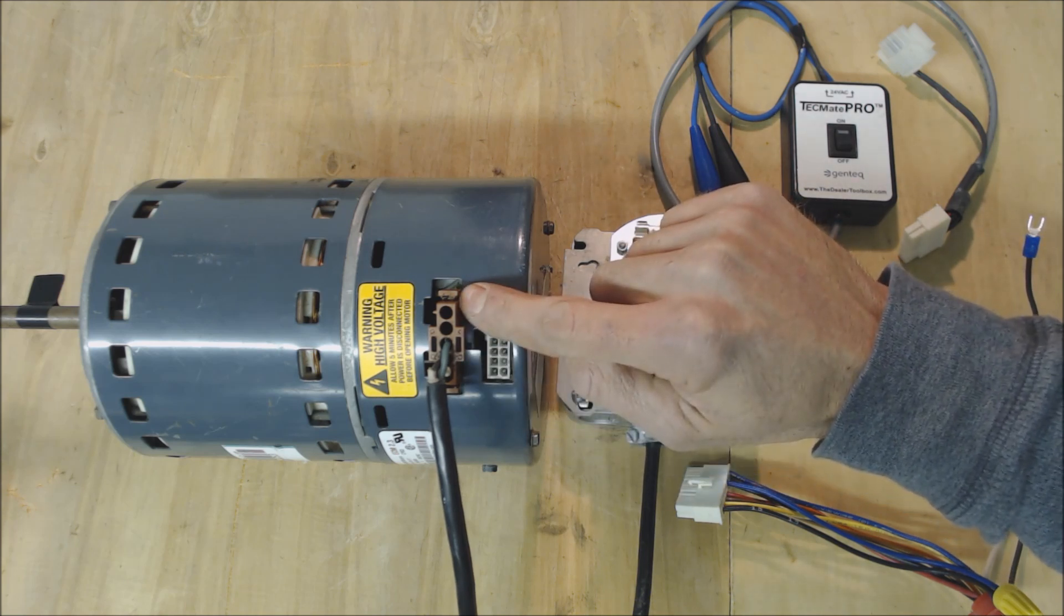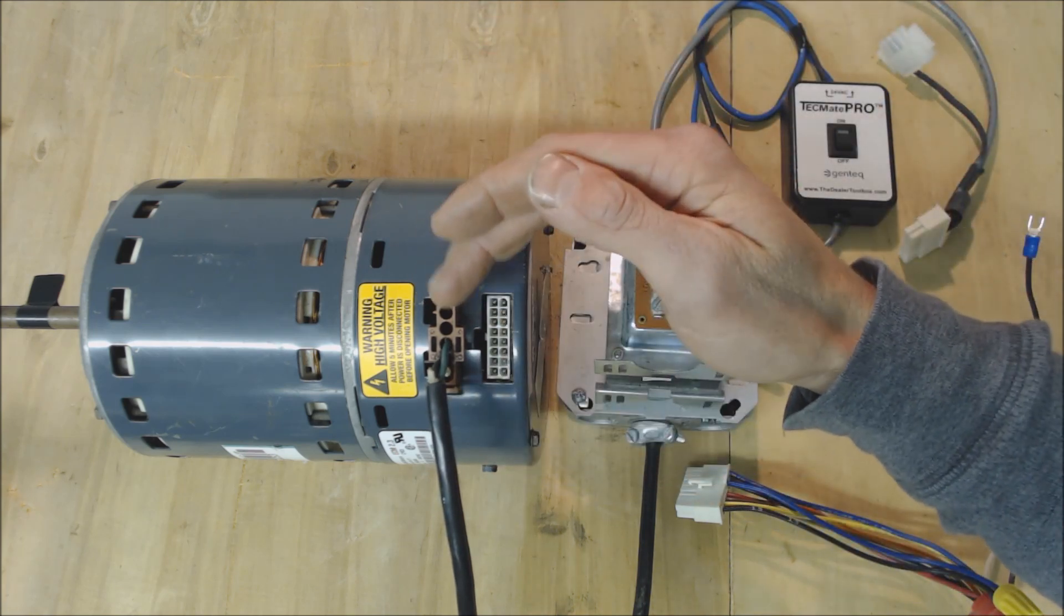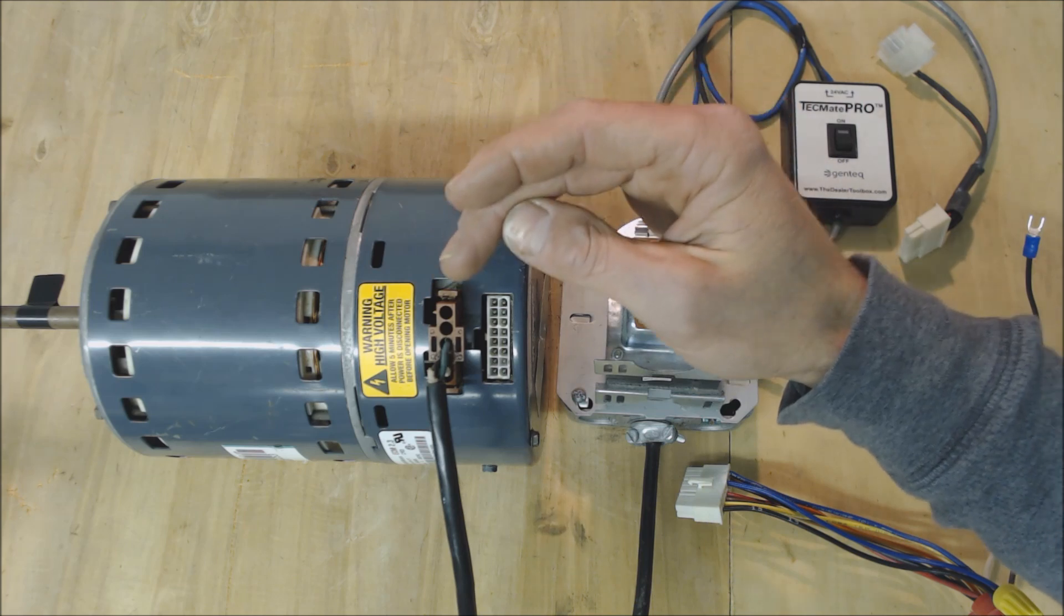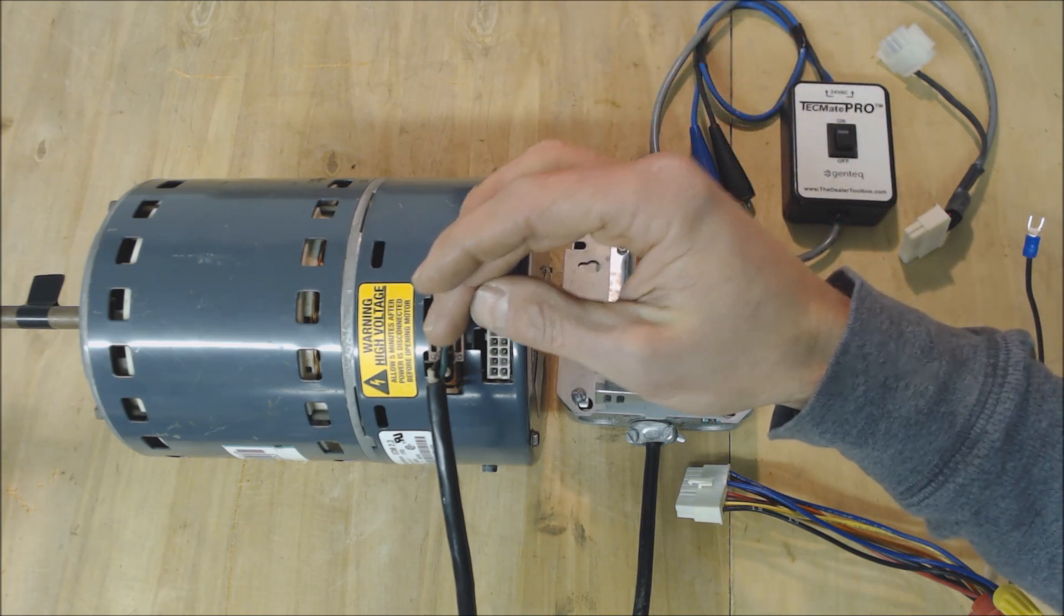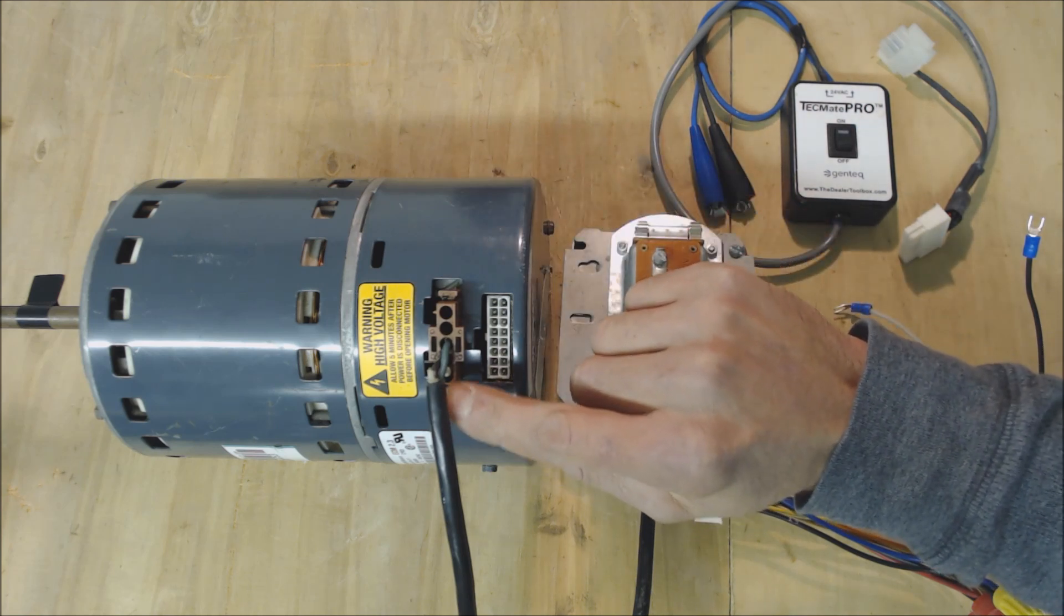This is supplied with line voltage all the time and if this was in a package unit or an air handler this would be 240 volts. If it was in an indoor furnace this would be powered with 120 volts all the time anytime that you have power going to your furnace.